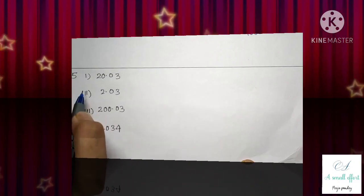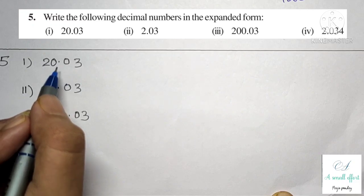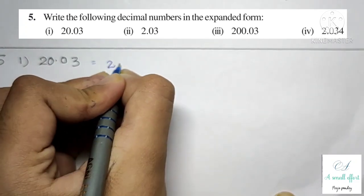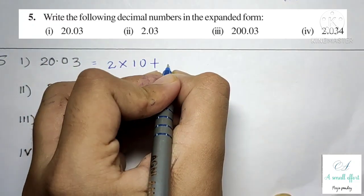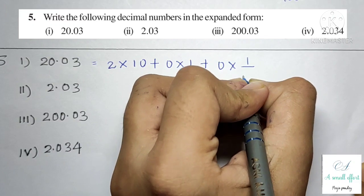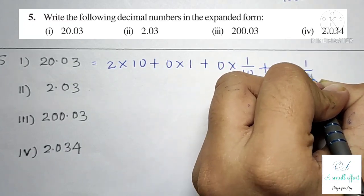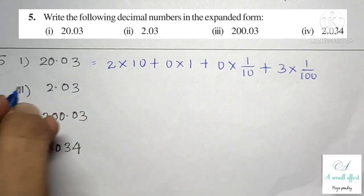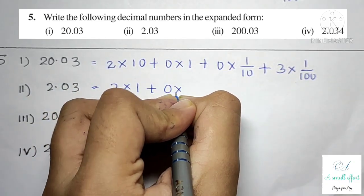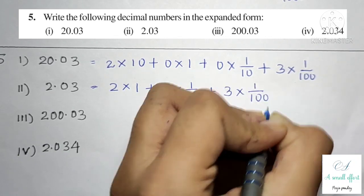Question number 5: write the following decimal numbers in expanded form. First part is 20.03: 2 × 10 + 0 × 1 + 0 × (1/10) + 3 × (1/100). Second part is 2.03: 2 × 1 + 0 × (1/10) + 3 × (1/100).